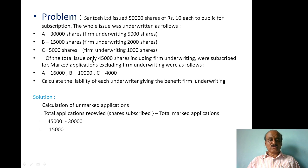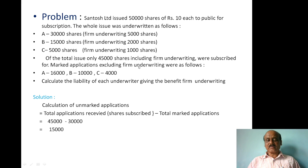Of the total issue, only 45,000 shares including firm underwriting were subscribed for. The marked applications excluding firm underwriting were as follows: A — 16,000; B — 10,000; C — 4,000. Calculate the liability of each underwriter giving the benefit of firm underwriting.